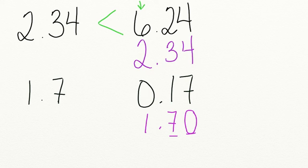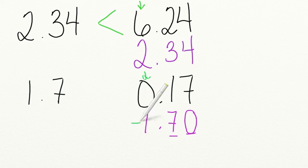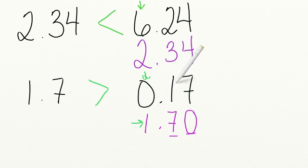Now I can compare these numbers. First, I need to start in the ones place, because that's the furthest place value to the left. Since one is greater than zero, I know that one and seven tenths is the larger number. So that means that one and seven tenths is greater than seventeen hundredths.